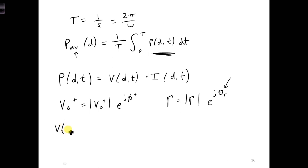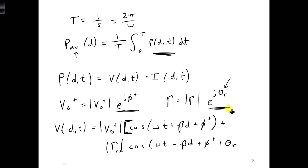So we're going to get V of D,T is the magnitude of V naught plus times the cosine of omega T plus beta D, this is after we convert to the time domain, plus phi plus, which comes from V naught plus. And then for the reflected wave, we'll get the magnitude of the voltage reflection coefficient at the load times cosine omega T. The V naught plus here is multiplied by all this, so I didn't write it here again in front of the reflection coefficient. Omega T minus beta D plus phi plus, and also theta R, which comes from the phase of the voltage reflection coefficient.